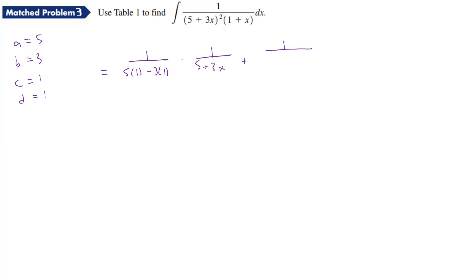Now I have 1 over, and then I have parenthesis 5 times 1, minus 3 times 1, then the quantity squared, and then I have LN, absolute value, of 1 plus X over 5 plus 3X.